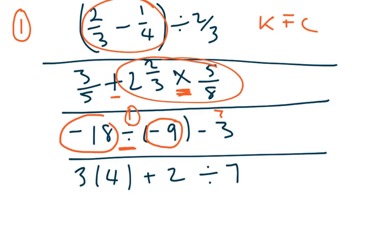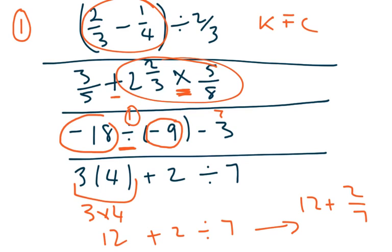And last but not least, this bracket here means 3 times 4. So, that would be 12 plus 2 divided by 7. And then according to the BIDMAS rules, or BIMDAS rules, we then do the multiplication, the division next. So, it's going to be 12 plus 2 divided by 7. The 2 divided by 7 happens first.